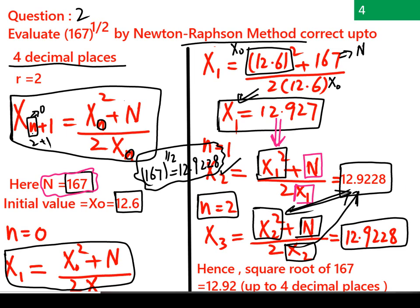We can now see that the answer is converging: both x₂ and x₃ give 12.92 at the beginning, and the question asked for 4 decimal places. The four decimal digits are repeated — we get 0.9228 in both cases. So our final answer is 12.9228.